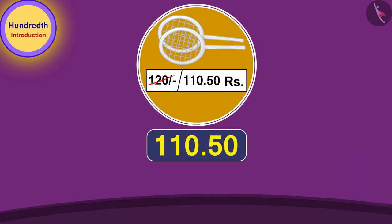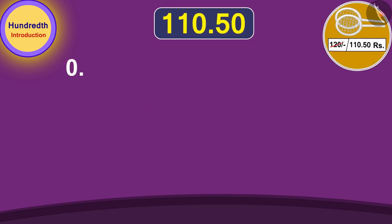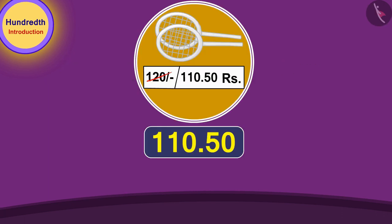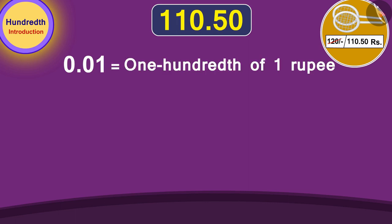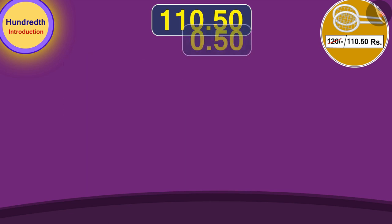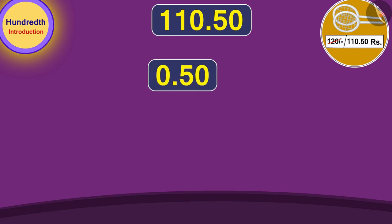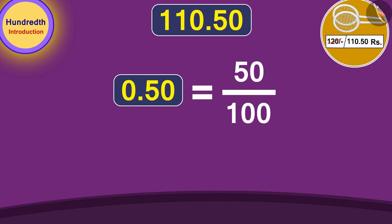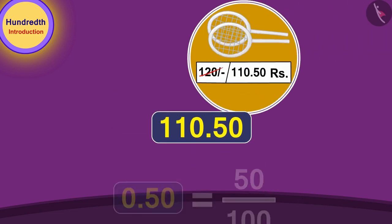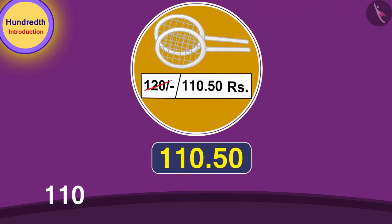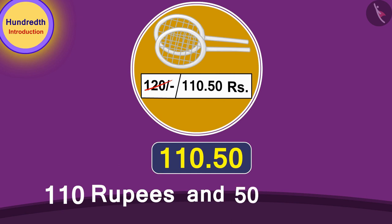We can write one hundredth part of any number using a decimal point as 0.01. The price of the badminton racket is one hundred and ten point five zero rupees. 0.01 rupee, or one hundredth of a rupee, is equal to one paise. So the price of the badminton racket is 110 rupees and 50 paise.